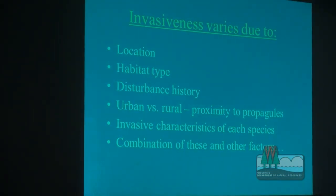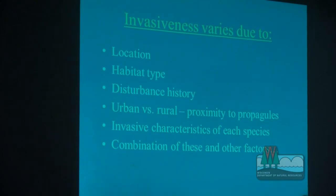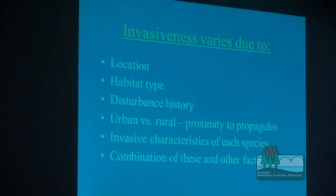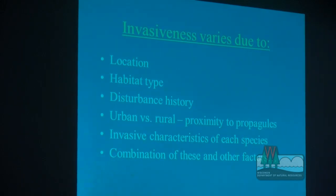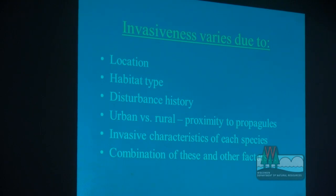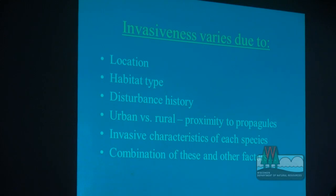There are many things that can influence invasiveness. You may have Japanese barberry planted around buildings in your area and haven't noticed it spreading yet — but that doesn't mean it won't spread. It really depends on habitat type, disturbance history, and what propagule sources are nearby. It could be that the particular barberry cultivar isn't one that produces lots of seed, but another planted might. Just because something hasn't been spreading doesn't mean it won't. Watching and waiting to see if it's going to spread is a big mistake — learn from others' mistakes and try to catch these things early.